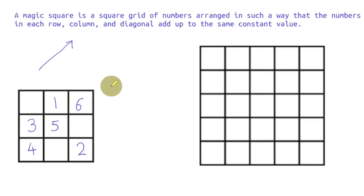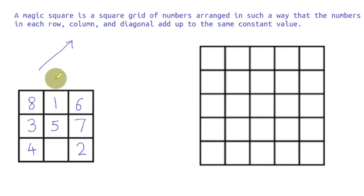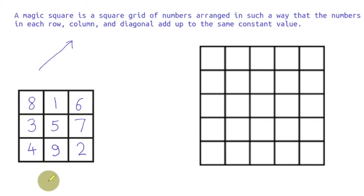Now if we move up and right, we are supposed to wrap, but this cell is already filled, so we go one cell down: 7. Again up and right, we are out of the square, so we wrap around and get 8. Again up and right, we wrap around and get 9. Notice that the sum of each row, column, and diagonal comes to the same constant value, which is 15. This was our 3 by 3 magic square.